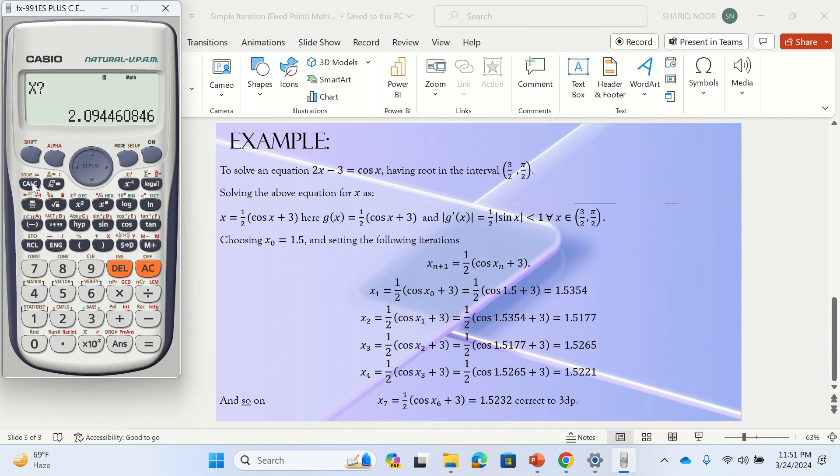It's a very simple thing in fixed point - simply take x = 1/2·cos(x) + 3. Once you've typed these quantities, simply press this calc and it would ask about the initial value. So you would simply give 1.5. When I press equal, I would get the first value that is 1.53536 and something. Next time we don't need to do anything, simply press this equal button, and you'll get 1.5177.